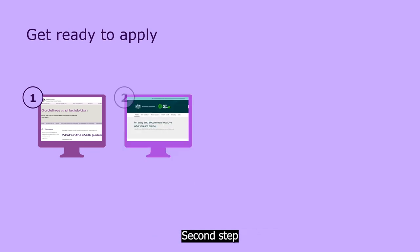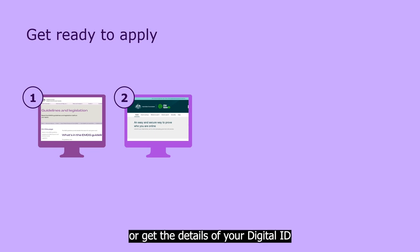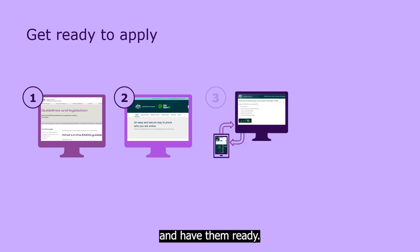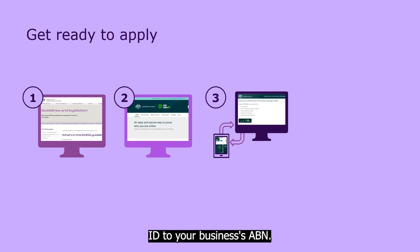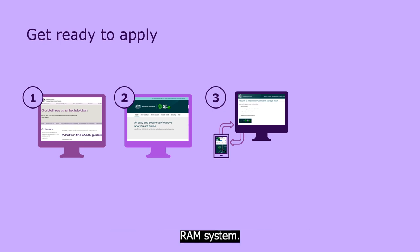Second step is to set up your government digital ID, or get the details of your digital ID and have them ready. Next, connect your digital ID to your business's ABN. You can do that through the government's RAM system.